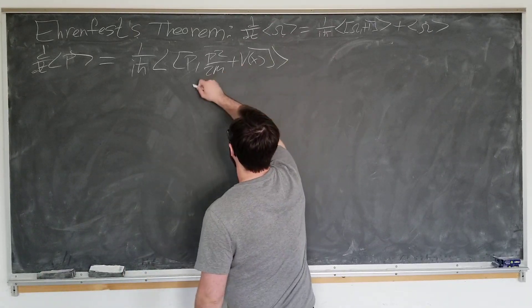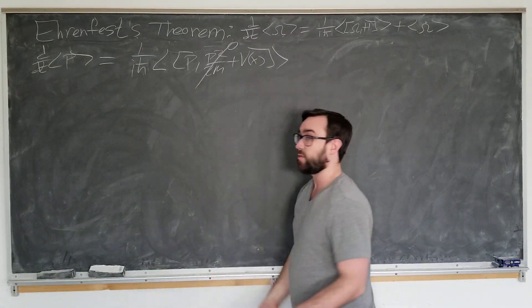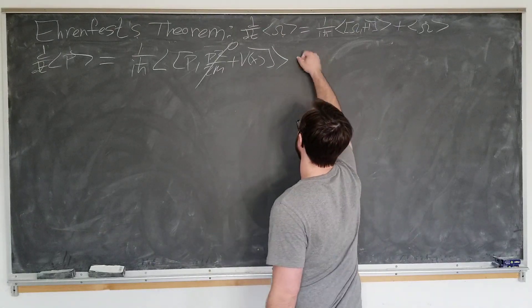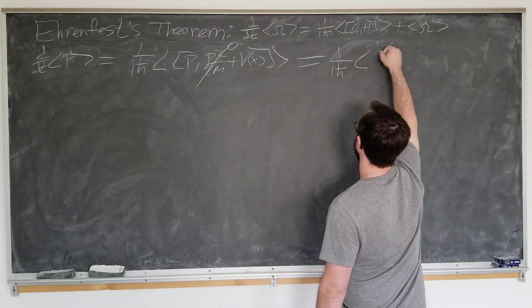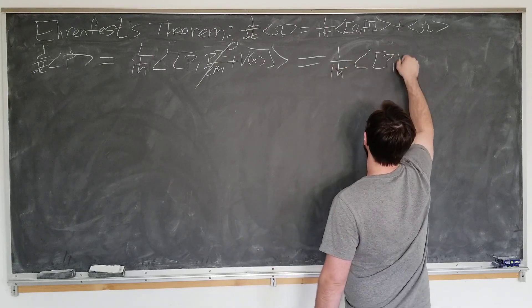We're just going to simplify this. We see that p with p squared is 0, since every operator commutes with itself. It becomes 1 over i h bar, expectation value of p with v of x.